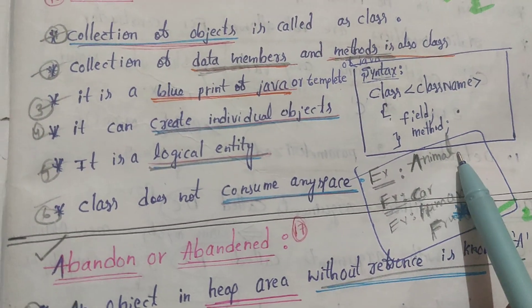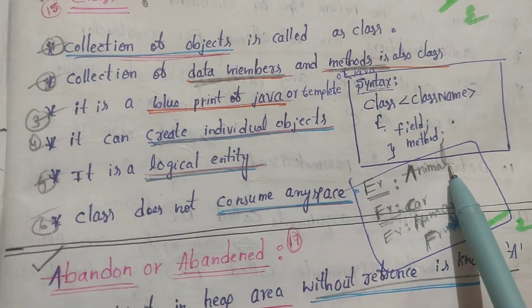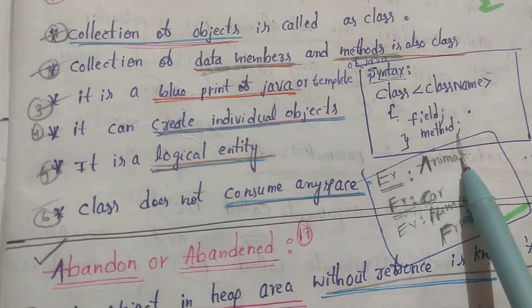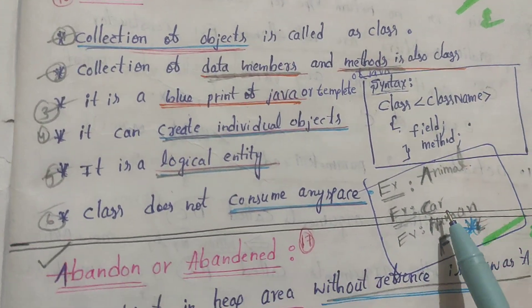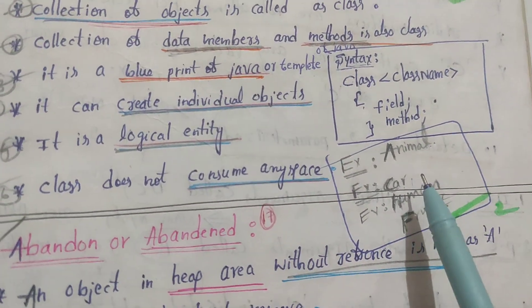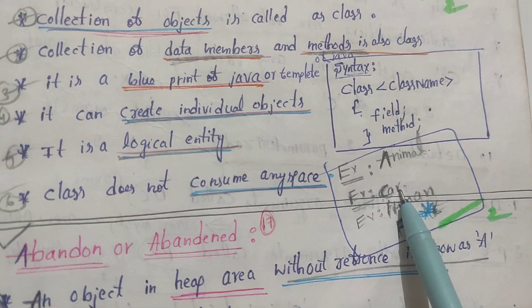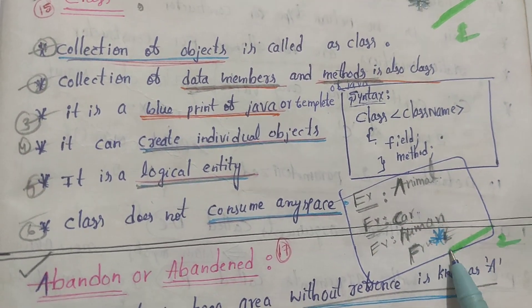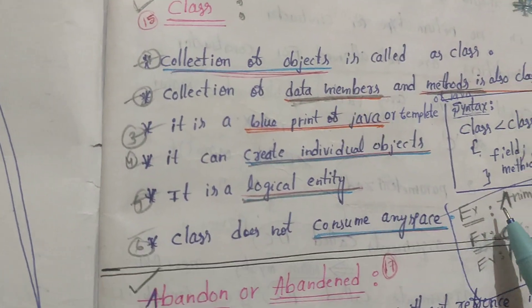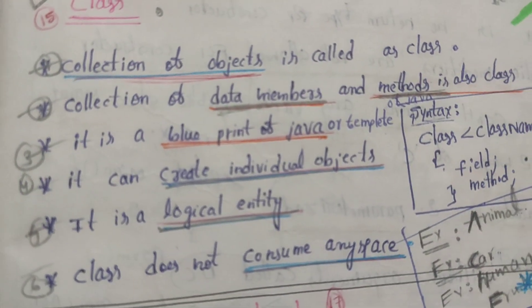For example, Animal - different types of animals. We can take Car, brands like Audi, Toyota. Human and fruits are also examples of classes. Let's get started.